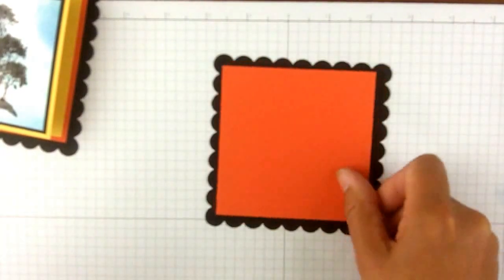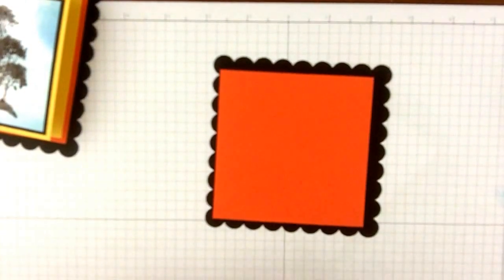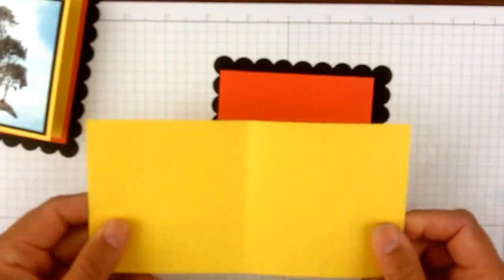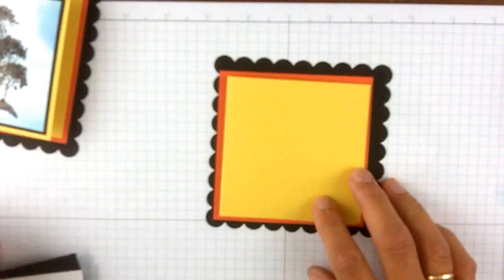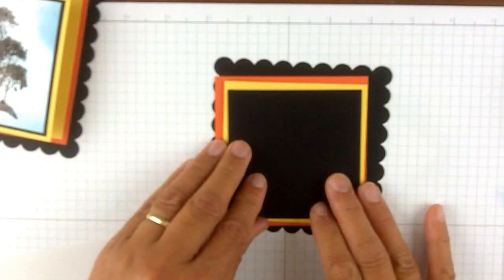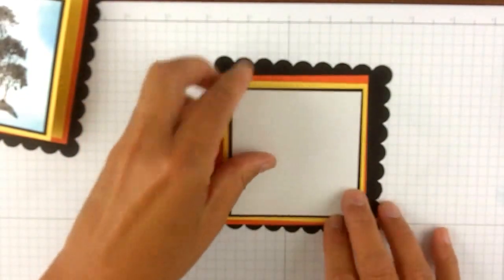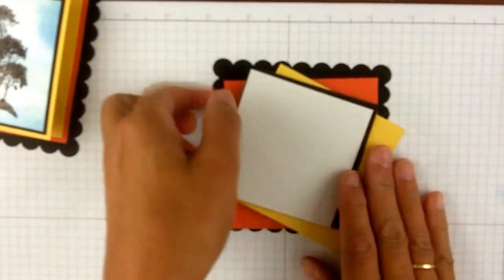To start with the base, using the large scallop square Bigz die. This piece is three and three-quarters square. This is the tangerine tango. From the daffodil delight, we have three and a half by seven scored and folded in half. The black piece is three and a quarter square. The white glossy is cut just a teeny bit under that. So that's how the card itself is put together.